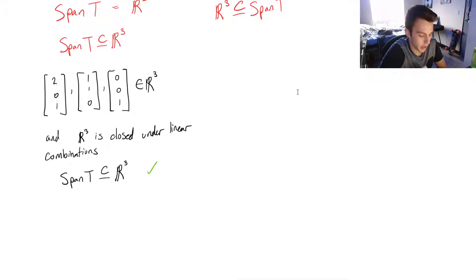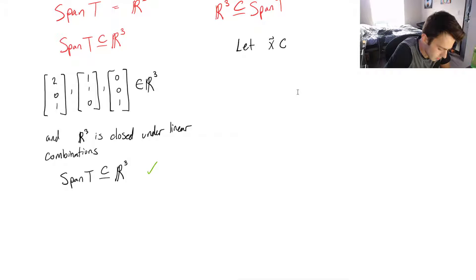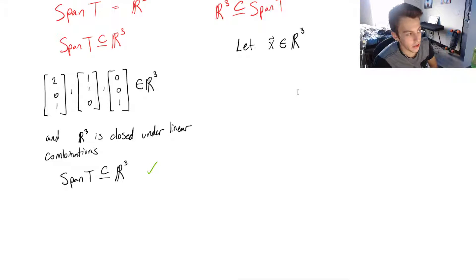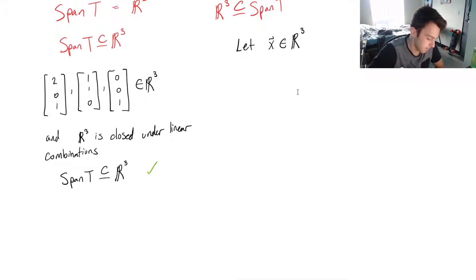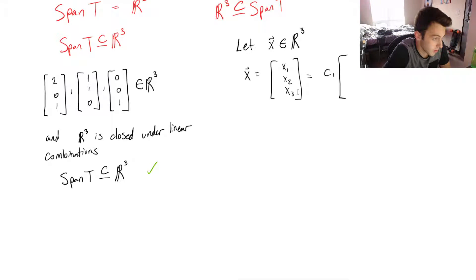Now I'd like to show that R3 is a subset of the span of T. To do that, let X be any vector in R3. If I can show that any vector in R3 can be expressed as a linear combination of those three vectors, then I can say that R3 is a subset of the span of T. So let X equal (x1, x2, x3), and let's express this as a linear combination of those three vectors.